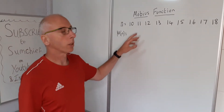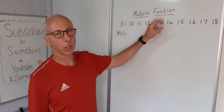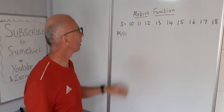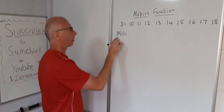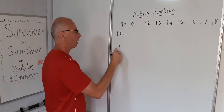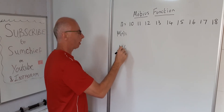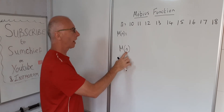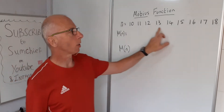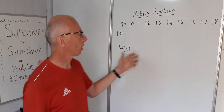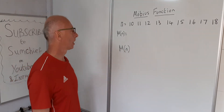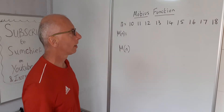In this video we're going to look at the Möbius function. The Möbius function has the notation mu of n — Greek letter mu — and n is the value. We're going to work with numbers 10 to 18, but you can work with any integers you like.